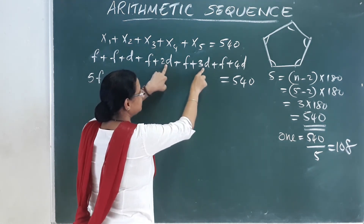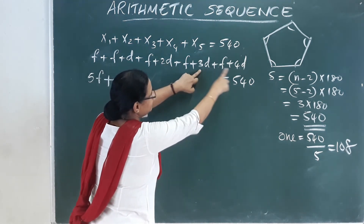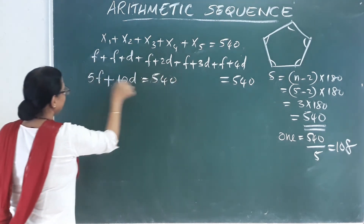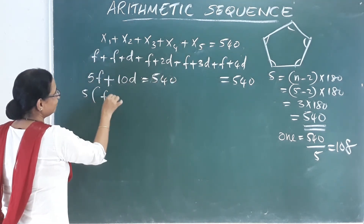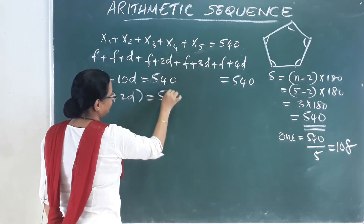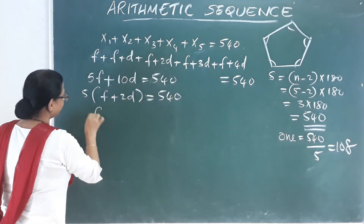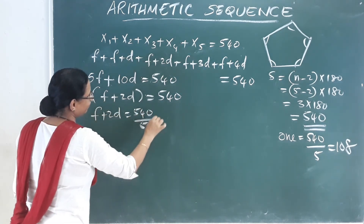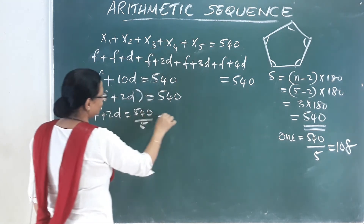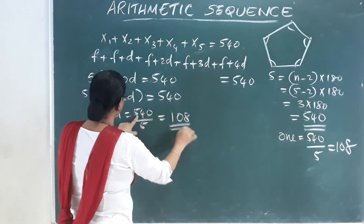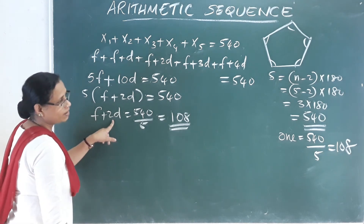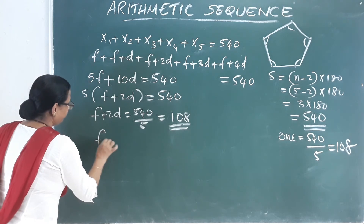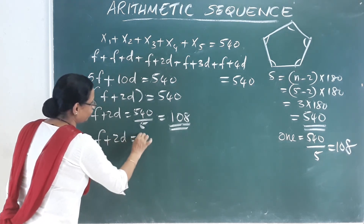Summing these: 5f plus 10d equals 540. Dividing by 5: f plus 2d equals 108. So the middle term (third angle) equals 108 degrees.